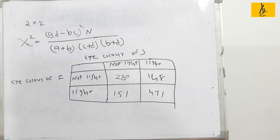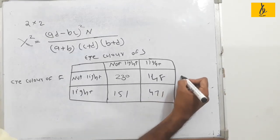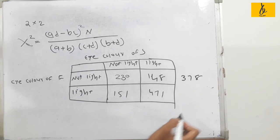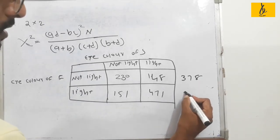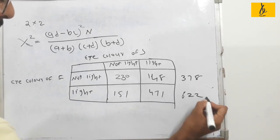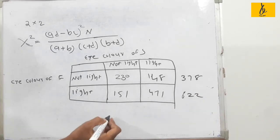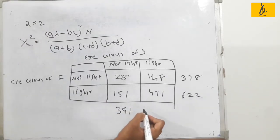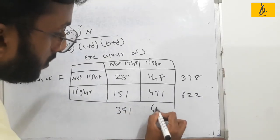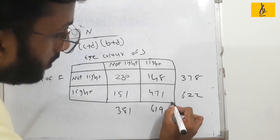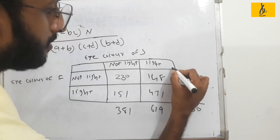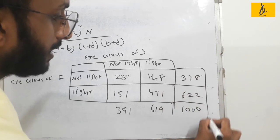If we have a total of 375, we add that total of 375, and in the same total of 375, the grand total N is 1000. We will now put the values into the calculator.